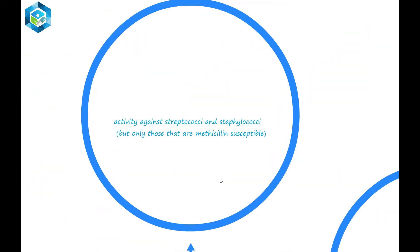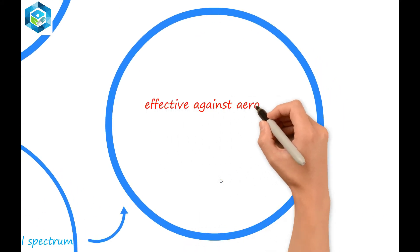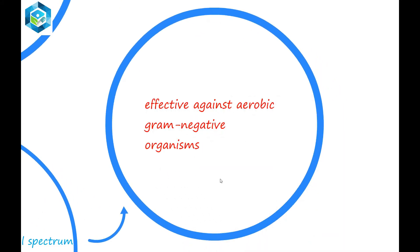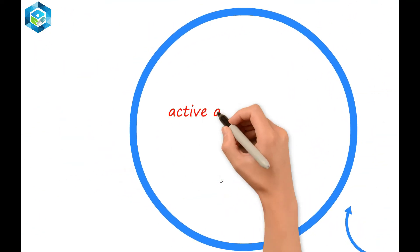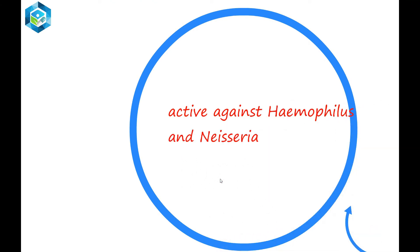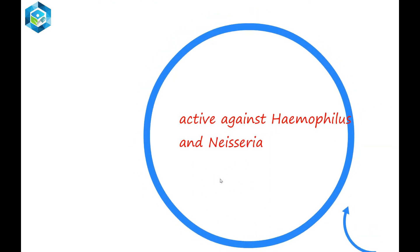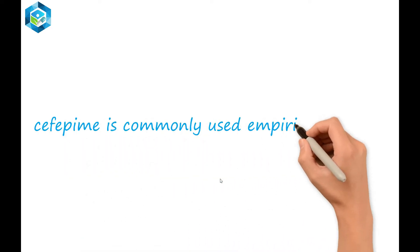streptococci and staphylococci, but only those that are methicillin-susceptible. Cefepime is also effective against aerobic gram-negative organisms such as Enterobacter species, Escherichia coli, Klebsiella pneumoniae, Proteus mirabilis, and Pseudomonas aeruginosa. It is highly active against Haemophilus and Neisseria.